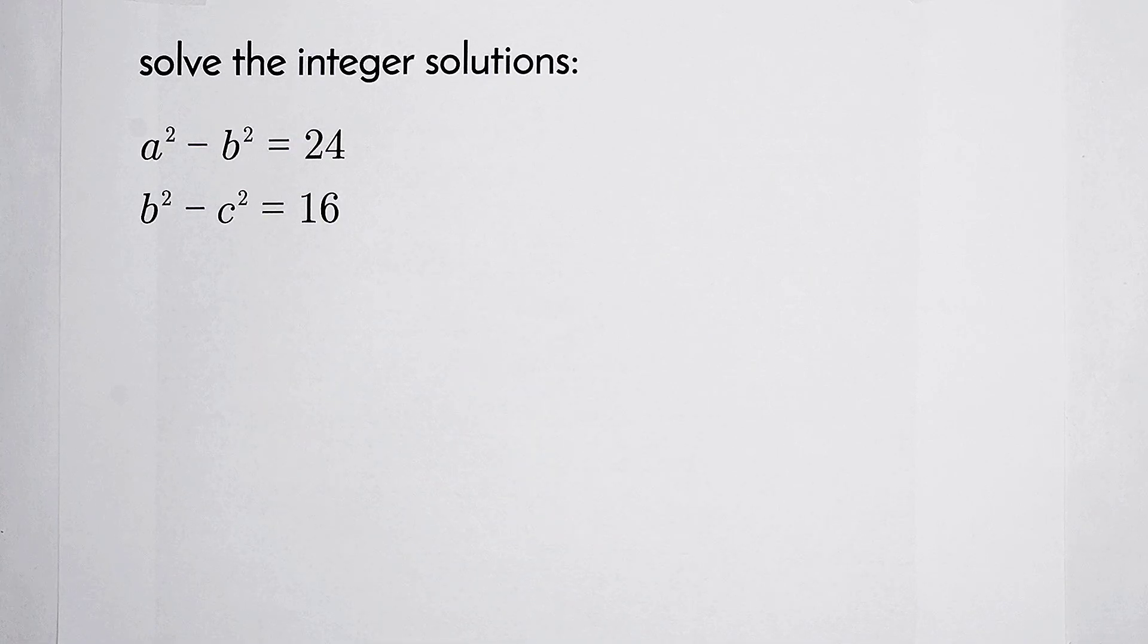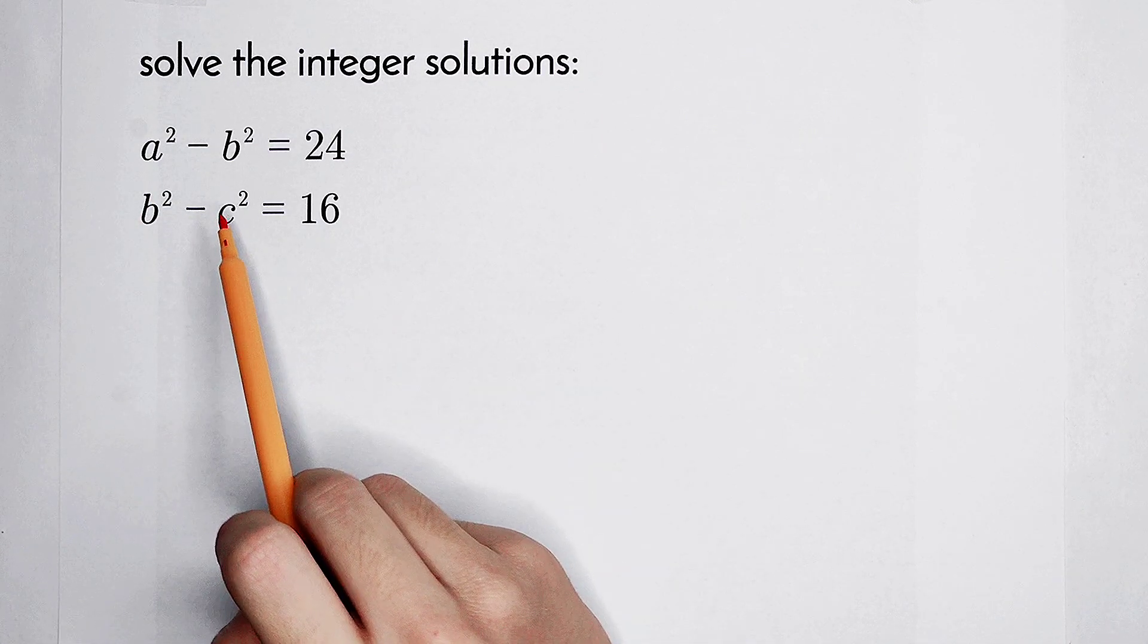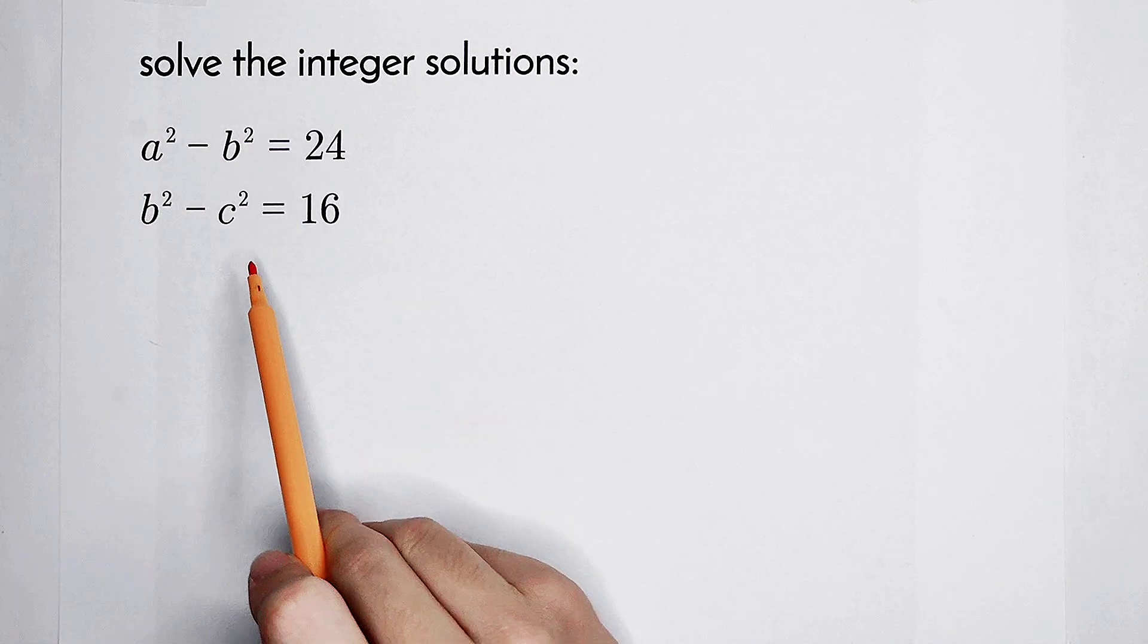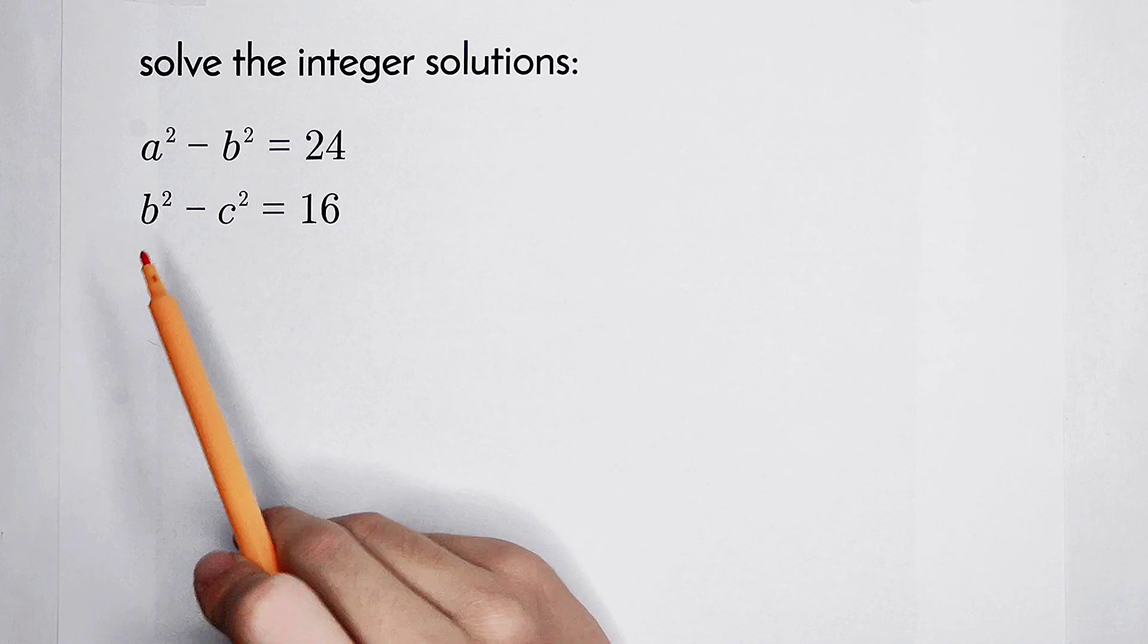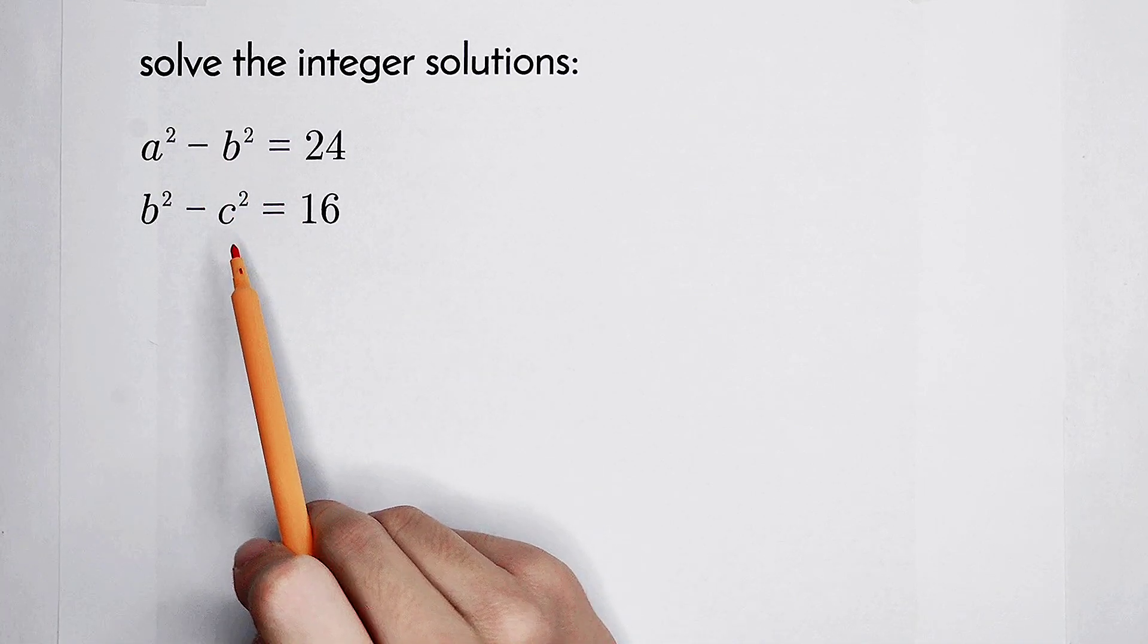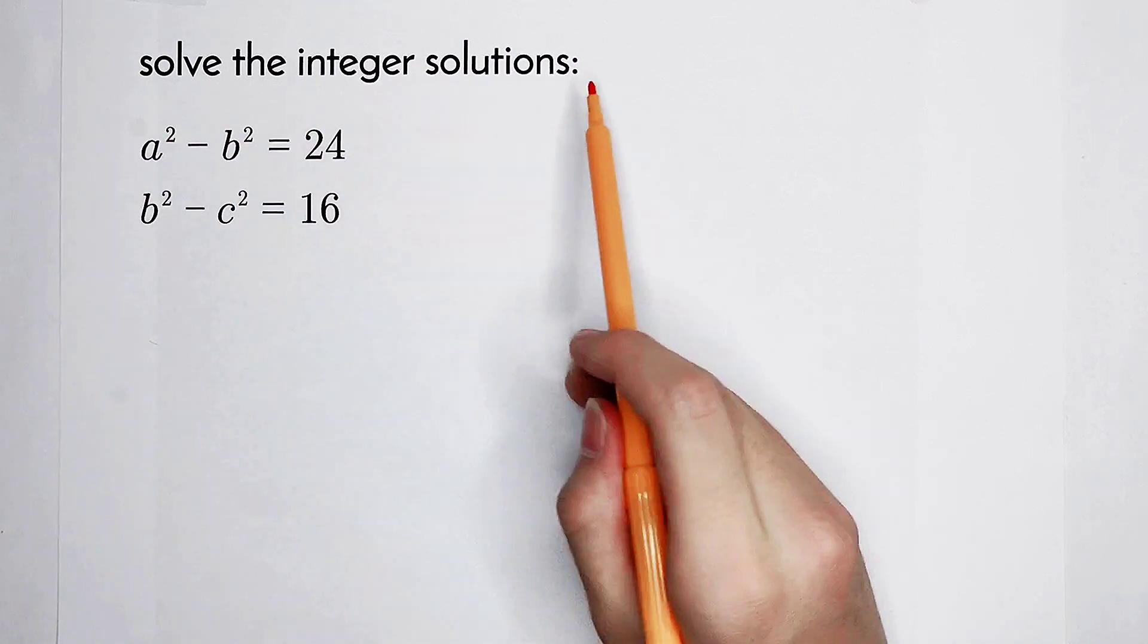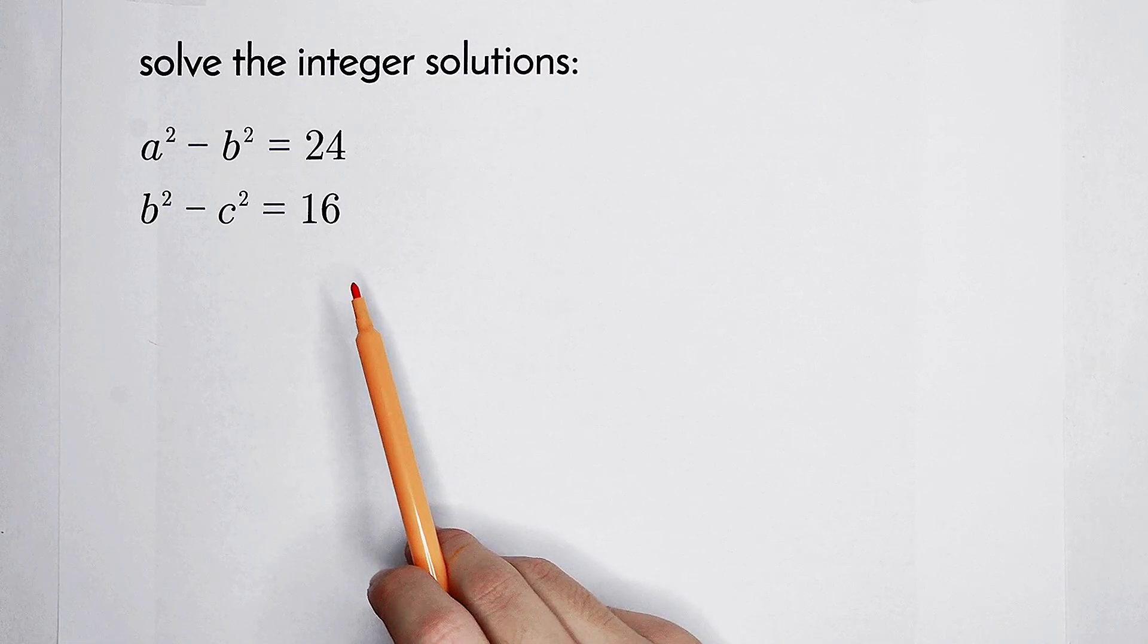First, by observation, we see a squared, b squared, and c squared. We have seen that b squared appears in these two equations. A squared number is always positive or equal to zero. But we have to solve the integer solutions of this equation, not the non-negative integers or the positive integers.